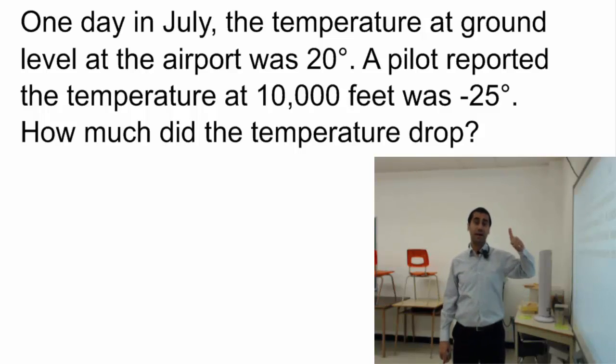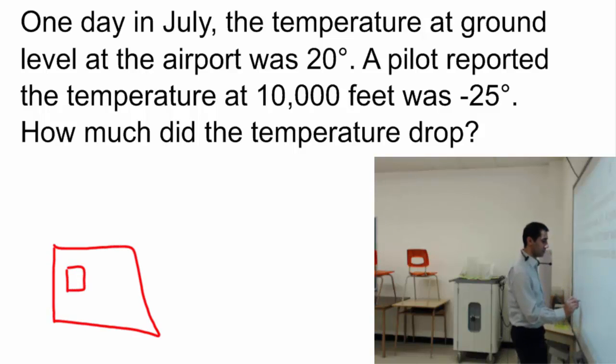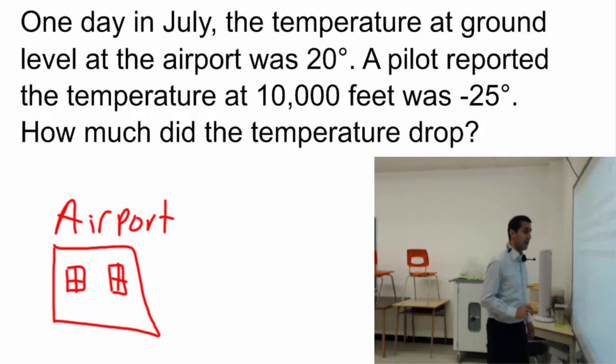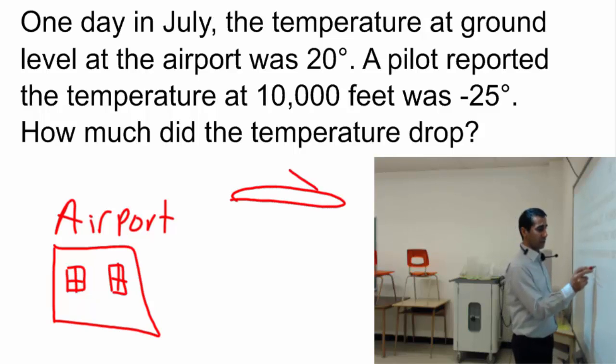Number one, draw. So, let's just draw about this situation. And the question is talking about airport. Let's just make an airport here. Those are the windows. And let's just say airport. And the pilot reports the temperature at minus 25 degrees, 10,000 kilometers above the ground level.